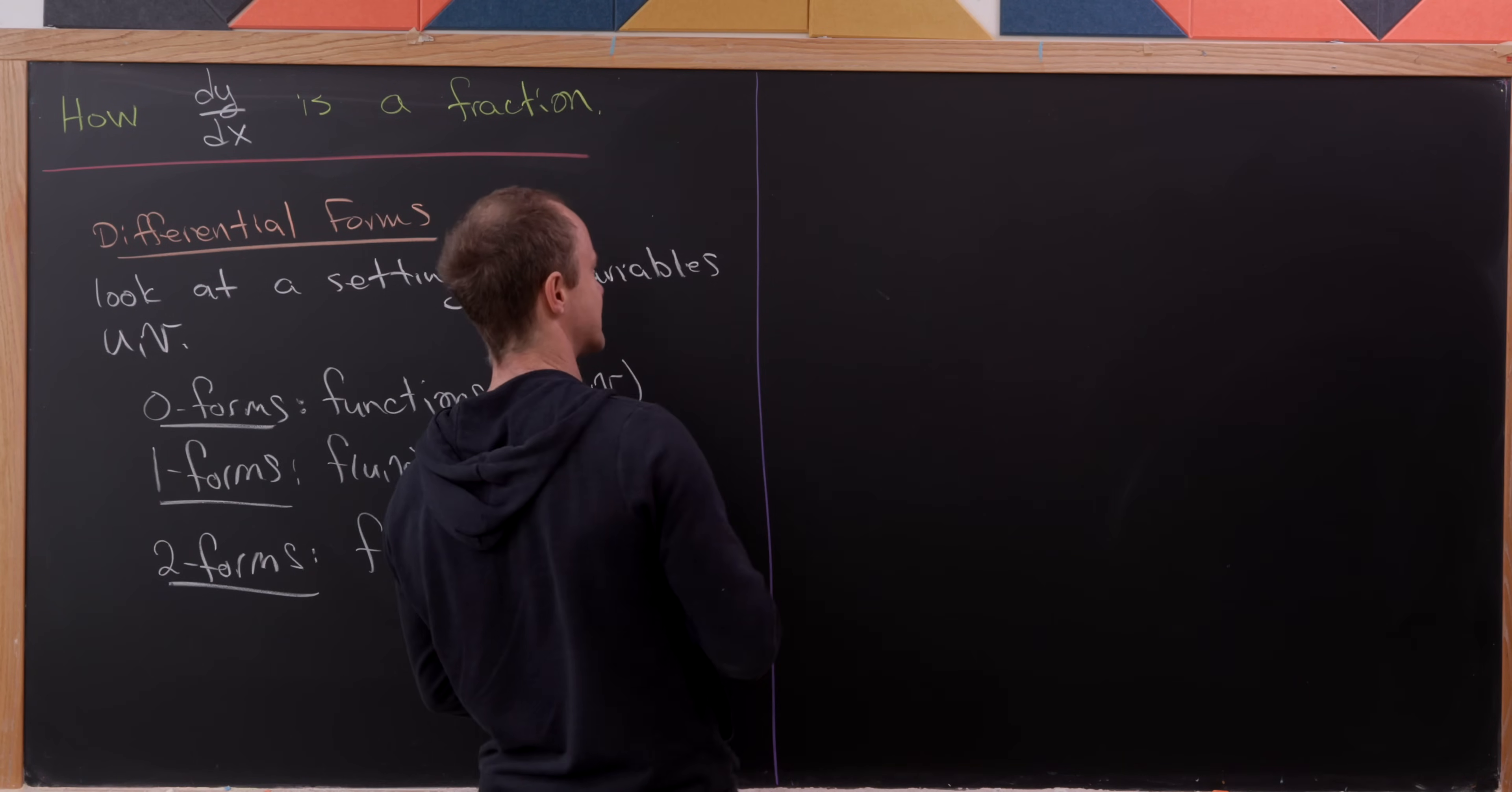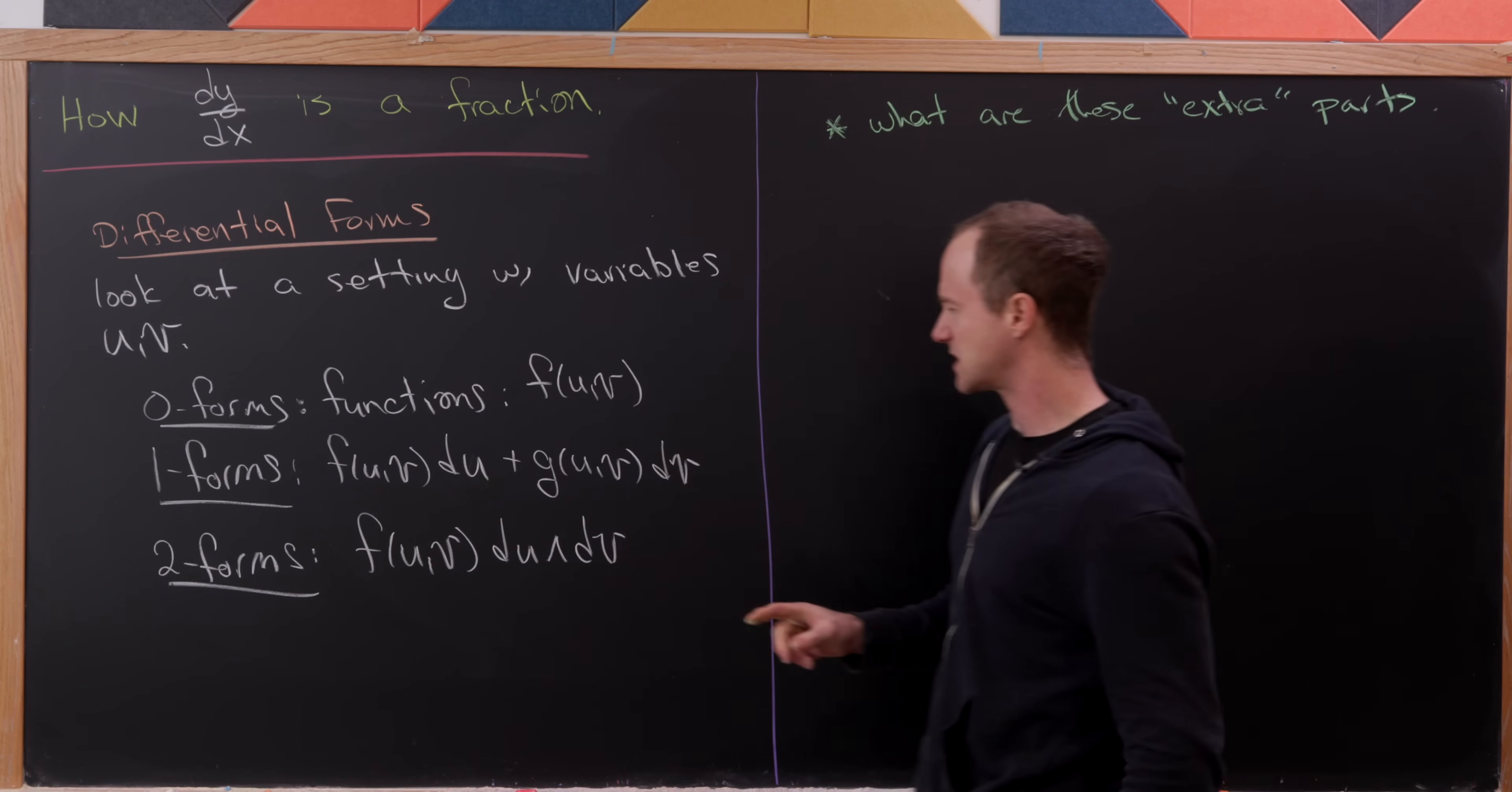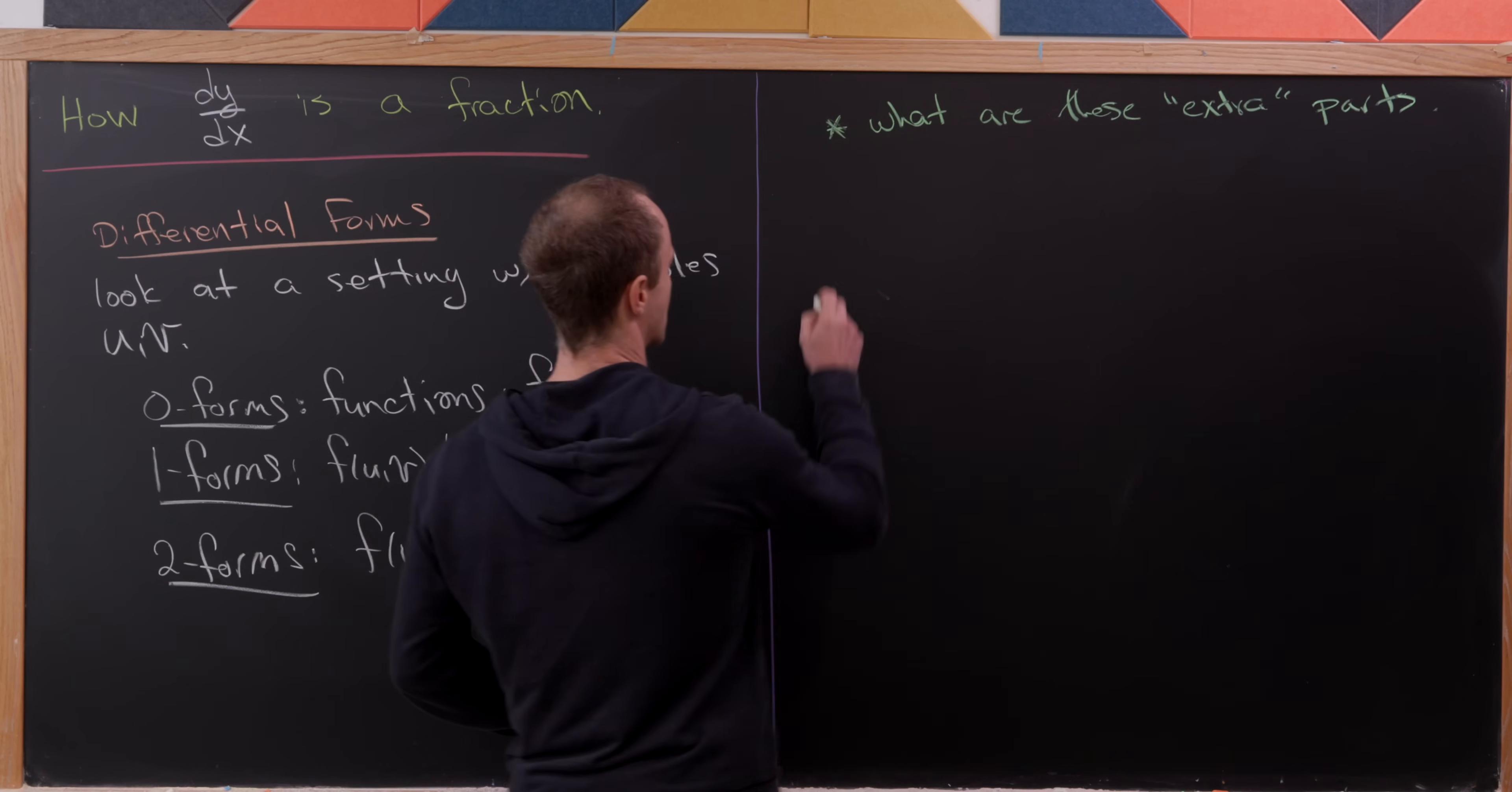So now I guess before we move on, we probably should address this looming question. And that is, what are these, I'll call them extra parts here. By extra parts, I mean the elementary one forms, du and dv, and the elementary two form, du wedge dv.